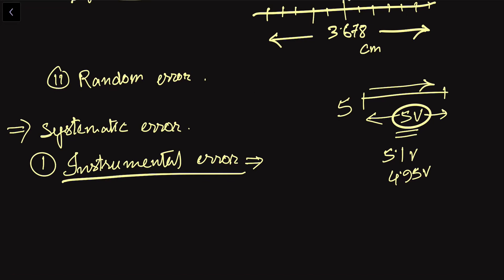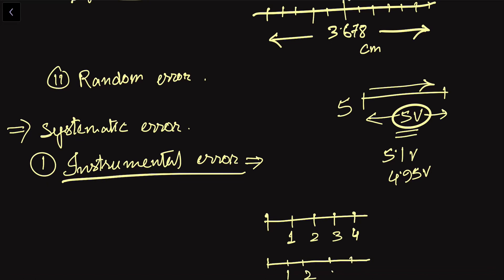For example, on a standard meter scale the markings at 1, 2, 3, 4 centimeters should be exactly at the correct positions. If the scale is made imperfectly and these points are not at the correct positions, that is instrumental error. Similarly, if you use a spherometer and one of its three legs is not in proper condition or has a shorter length, it will give a wrong reading — this is also instrumental error.